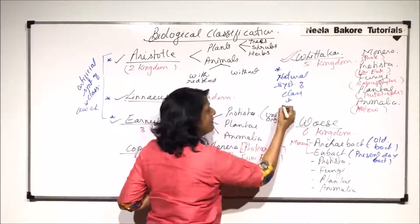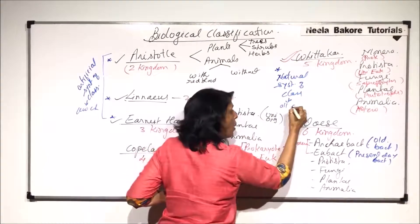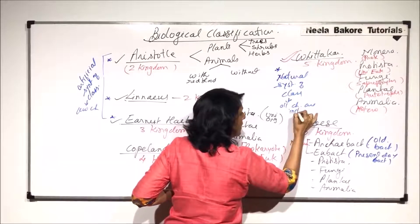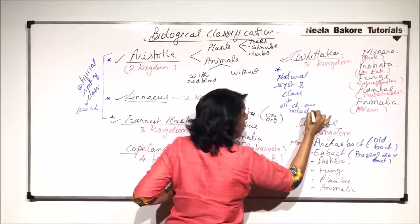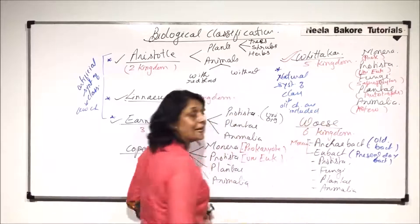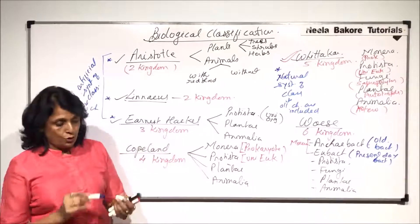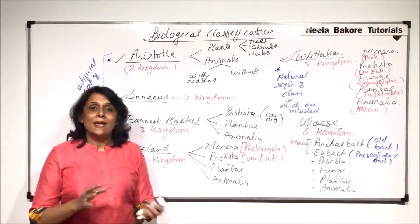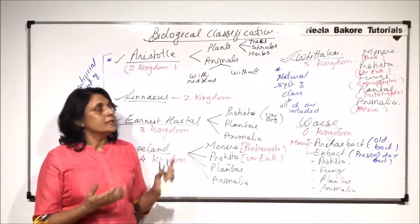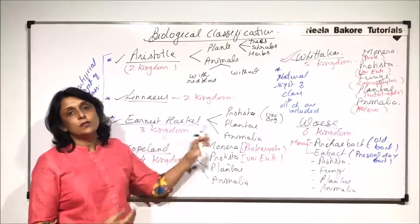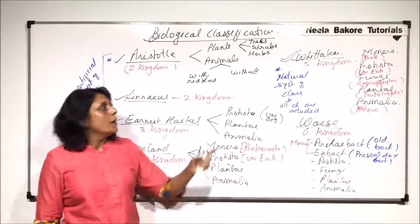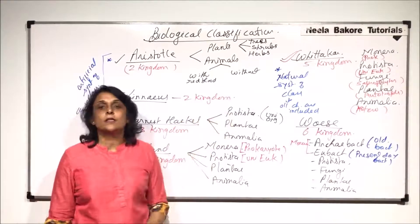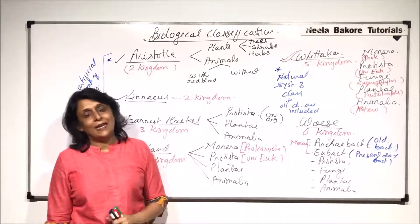The natural system means when all characters are included or studied, except evolution. There are two main categories: artificial system and natural system. In the next part, we will take up Whittaker's classification in detail.